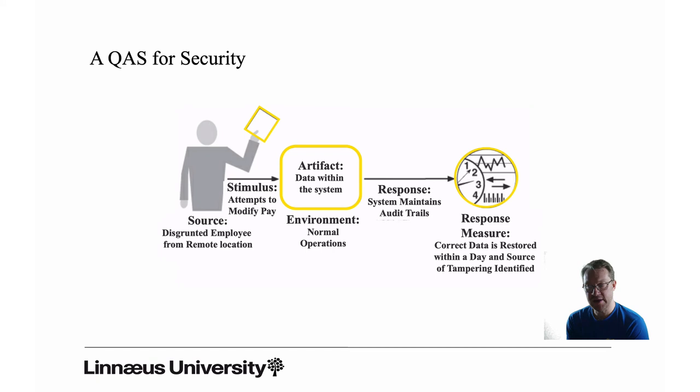Here's an example: you have the disgruntled employee from a remote location attempts to modify a pay. The environment runs - so the system runs in normal operations. The artifact is some data within the system. But since the system maintains audit trails, you can actually find out if the disgruntled employee has attempted to modify a pay part in the data. So you can correct the data, you can restore it within a day, and you can also identify the source. You can identify the disgruntled employee because you have the audit trails. This is an example of another security QAS.